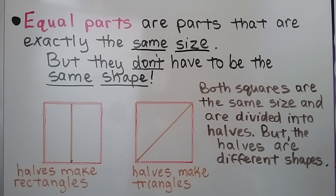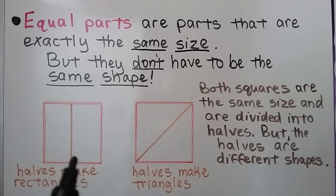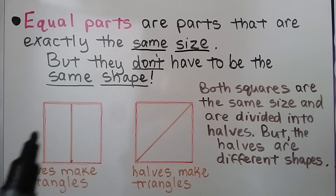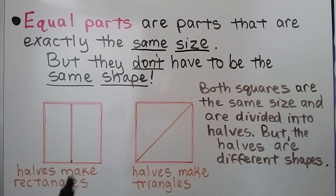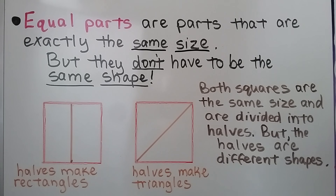Equal parts are parts that are exactly the same size, but they don't have to be the same shape. Here we have two squares. They're both the same size, and they're divided into halves, but the halves are different shapes. Here we cut the square going vertically this way, and we made a half and a half. The halves make rectangles.